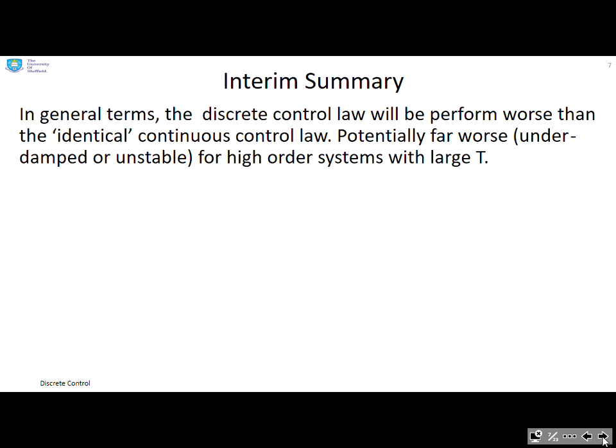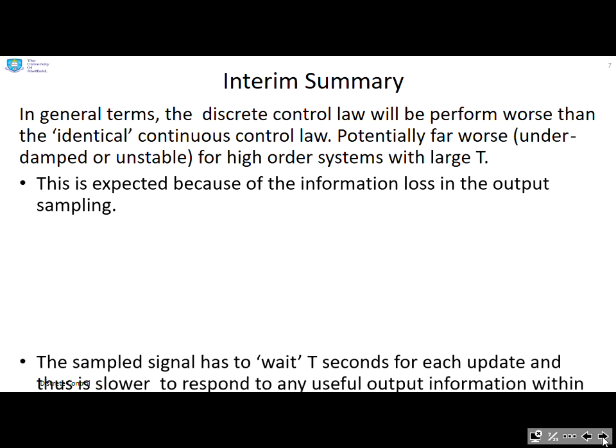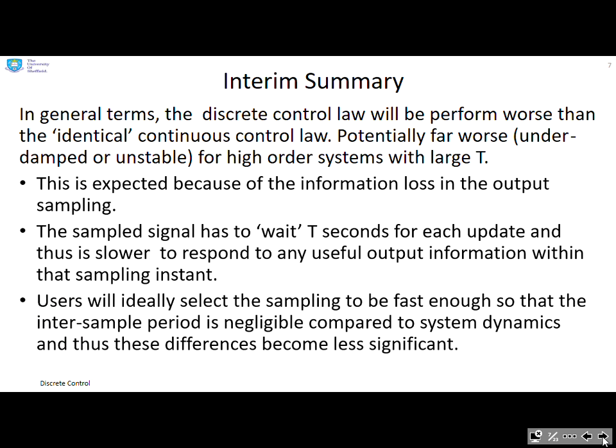So an interim summary. In general terms, the discrete control law will perform worse than the identical continuous control law—potentially far worse, and it can even be unstable if you make the sampling time too large. This is expected because of the information loss in the output sampling. The sample computer has to wait T seconds before it can do an update, and thus if there's any useful output information occurring within that sampling instant it doesn't see it until it gets to the sample, so it's slower to respond. Ideally, users are going to select the sampling to be fast enough so that this inter-sample period is negligible compared to system dynamics so that the differences become less significant.